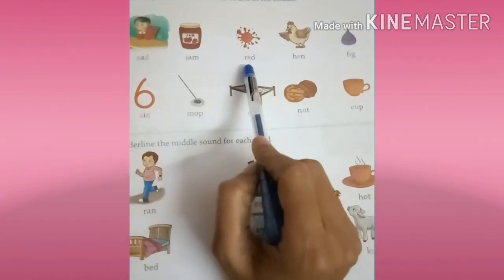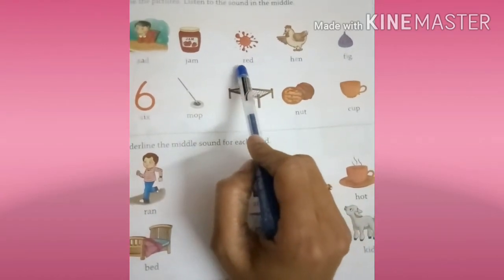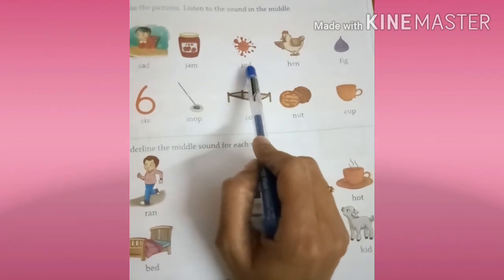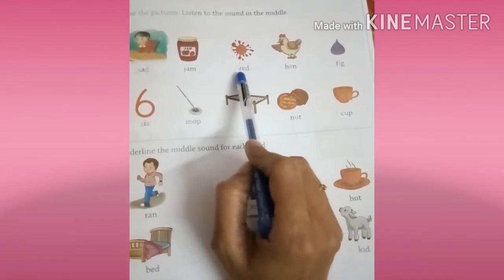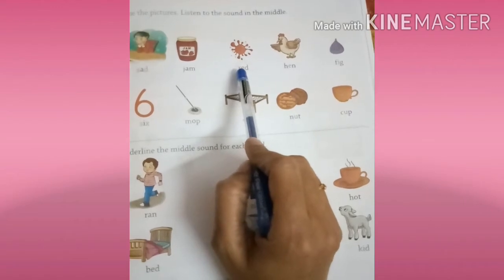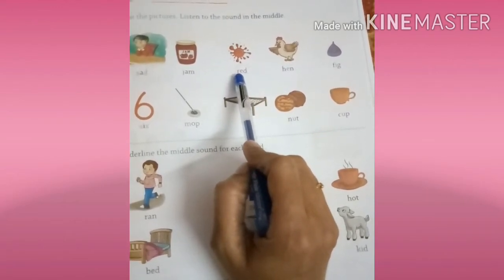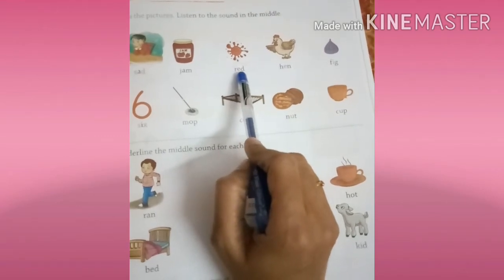R-E-D. R sound is R, E sound is E, D sound is D. R-E-D. R sound is R, E sound is E, D sound is D. Red, okay. R-E-D, red.